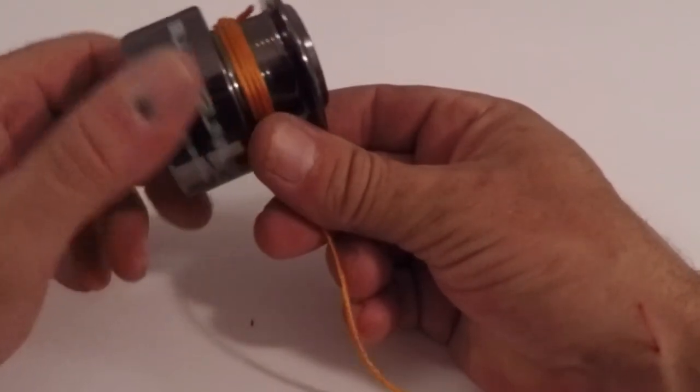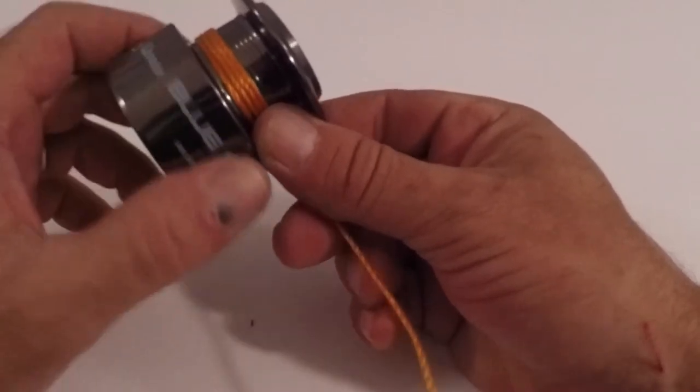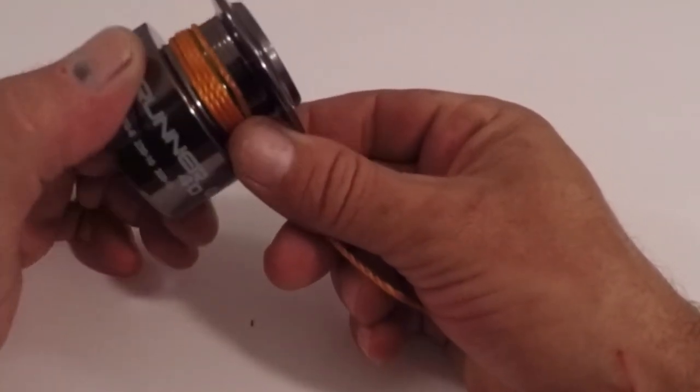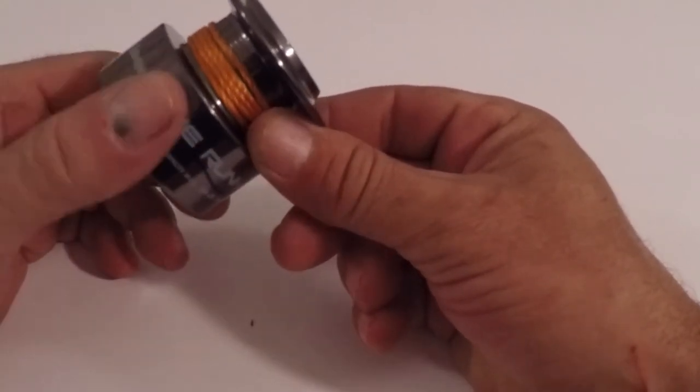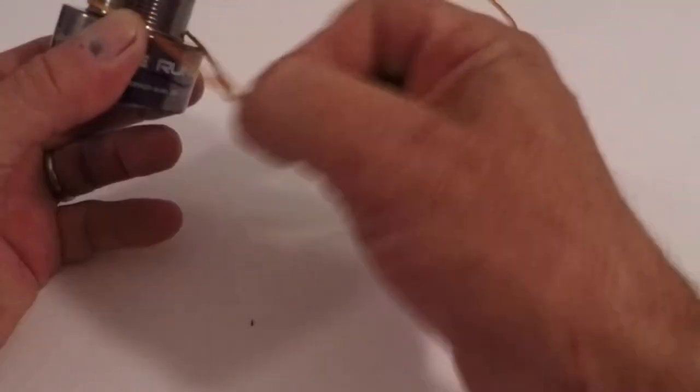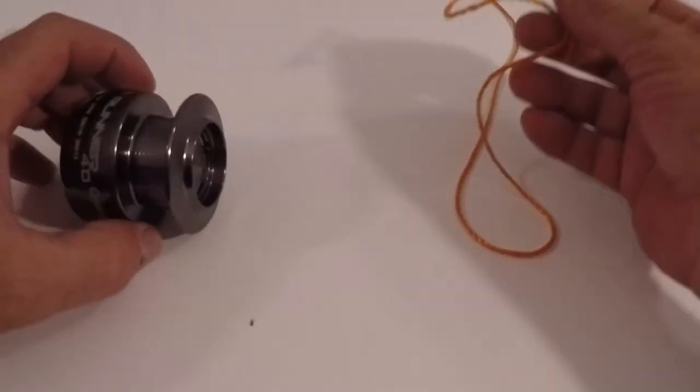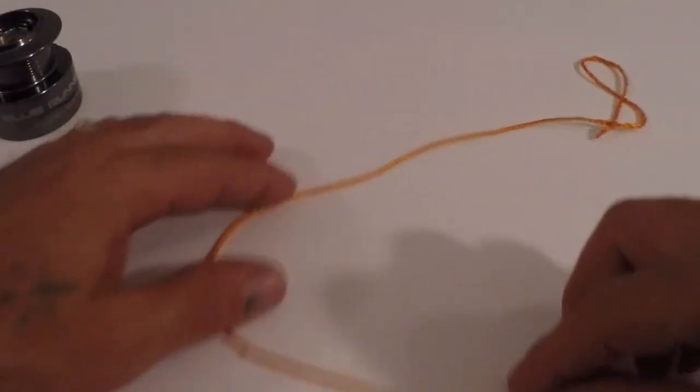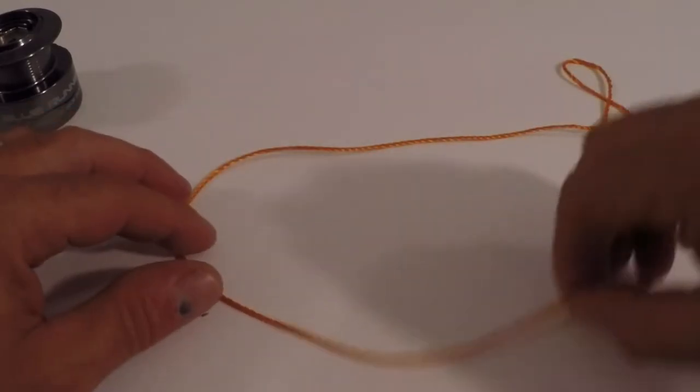Now don't forget that I'm using some twine so you can see what is going on, because with the fishing line this camera just does not pick it up. So it's a real simple quick knot. Let's do it one more time. We'll do it without the spool so it's easier to see.